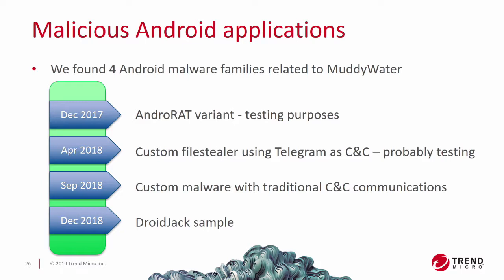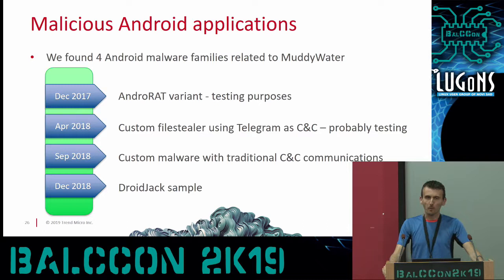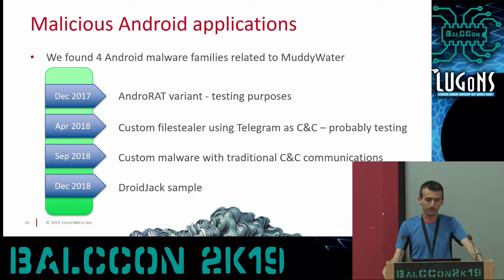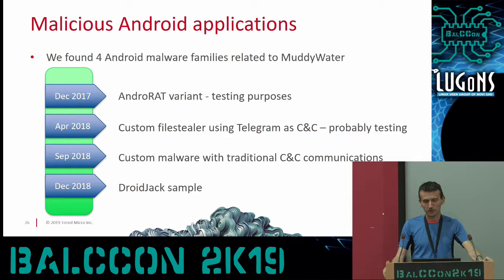Now let's look at malicious Android applications. For mobile applications, we haven't found much data - just four samples. The first and last cases, Android RAT and DroidJack, are commodity malware downloadable from the internet. The second and third cases were custom: the first was a custom file stealer using Telegram as a C2 channel, and the other used traditional C2 communication without cloud services or messengers.